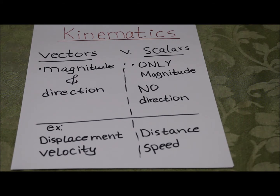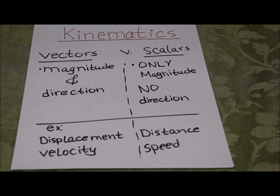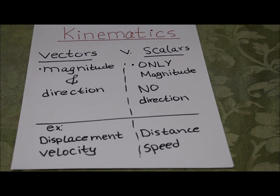An example of a vector would be displacement, and an example of a scalar would be distance. Displacement is a vector because it's concerned with the direction traveled — specifically, the distance between the start point and the end point. Whereas distance would be the route you take to get from point A to point B.